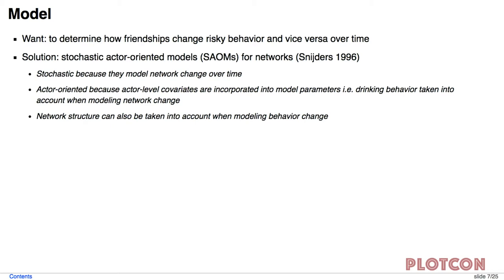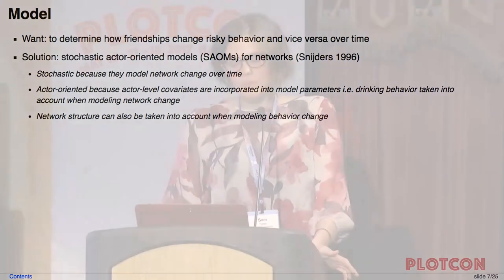The solution for this that I'm using is the stochastic actor-oriented models, and I'm going to refer to these as SOMs. They're very aptly named. They're stochastic because they model change over time. They're actor-oriented because they take into account behavior covariate information. So you might have the drinking behavior taken into account when modeling the network change. And you can also take into account the network structure, the already existing friendships, when you're modeling the behavior change. Here the actors are the girls and the nodes and the ties are their friendships between each other.